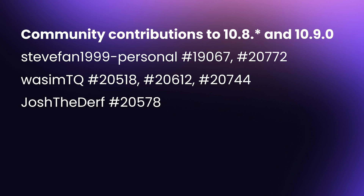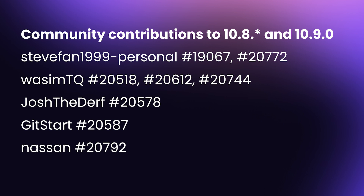Thanks to Joshua for fixing the calendar layout to load only items within the current range when no filter has been provided by a user. Thanks to the team at Gitstart for fixing support of pasting comma-separated values into the is-one-of filter. And finally, thanks to Nassan for ensuring our CLI schema apply command output is better visible across different terminals and color schemes.